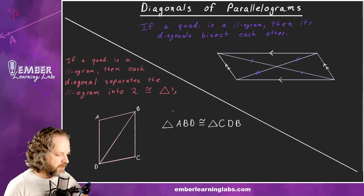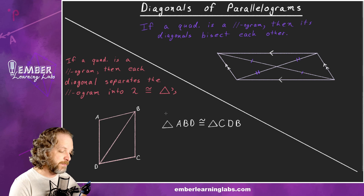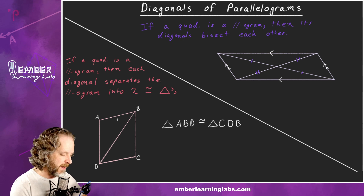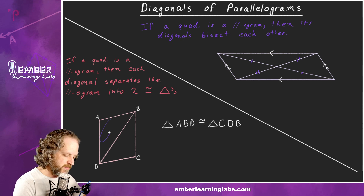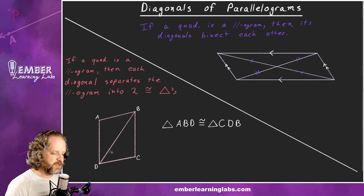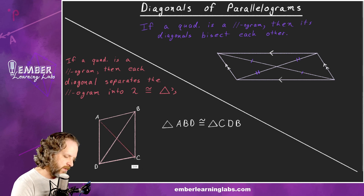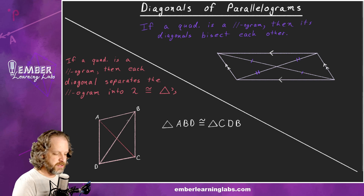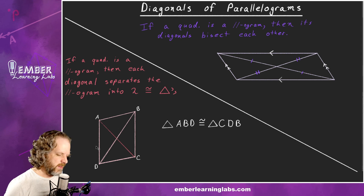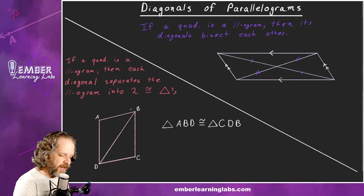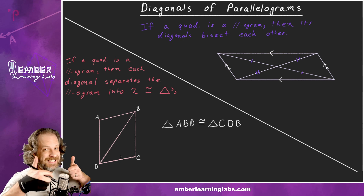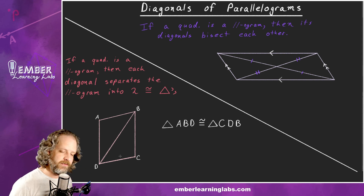Theorem 6: If a quadrilateral is a parallelogram, then each diagonal separates it into two congruent triangles. Triangle ABD is congruent to triangle CBD. This also works in the other direction — splitting it the other way gives two congruent triangles as well, because both pairs of opposite sides are parallel and congruent.